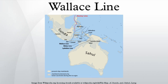The distributions of many bird species observe the line, since many birds do not cross even the smallest stretches of open ocean water. Some bats have distributions that cross the line, but other mammals are generally limited to one side or the other — an exception is the crab-eating macaque. Other groups of plants and animals show differing patterns, but the overall pattern is striking and reasonably consistent. Flora do not follow the Wallace line to the same extent as fauna.